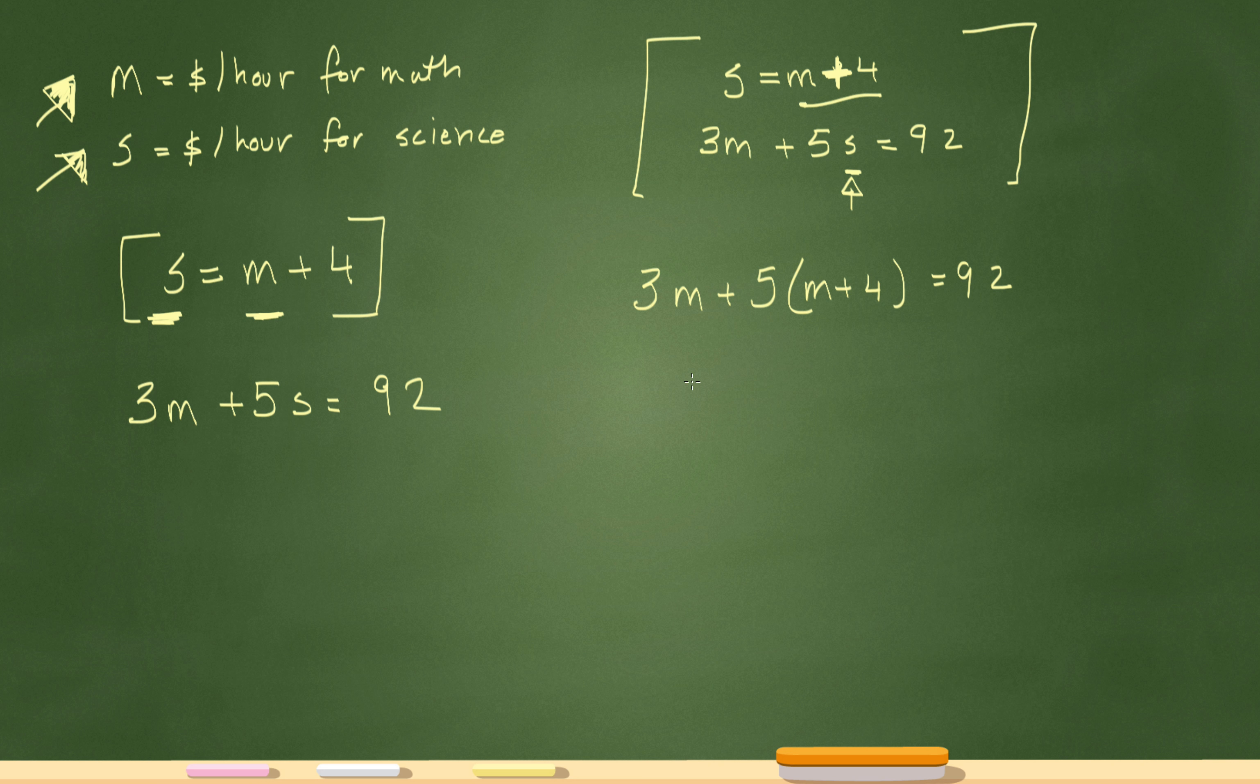This will be 3M plus—this should be 5M all over the place equals 92. I did 5 times 3, I don't know why. That should be 3M plus 5M—5 times M—and 5 times 4. So 3M plus 5M is 8M. 8M plus 20 equals 92.